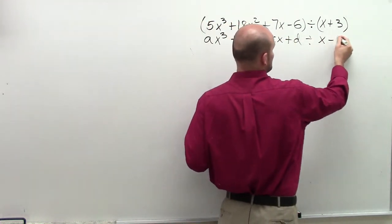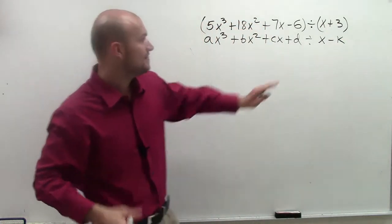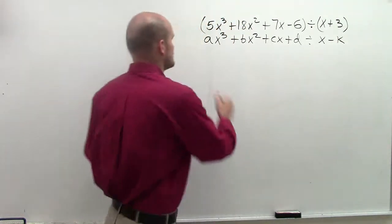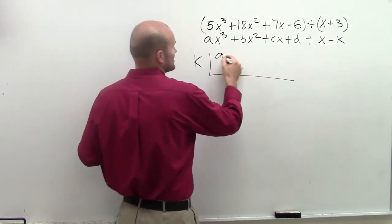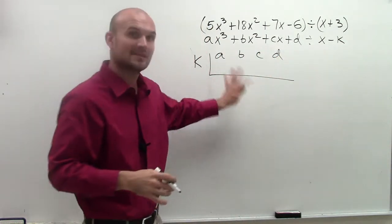divided by x minus k. The x minus k is very important because we're going to be using the opposite value of k in this case. So we're going to put k on the outside and then label the coefficients and constant up top. That's what we're going to set up.